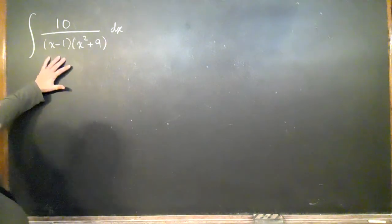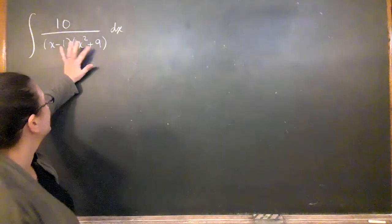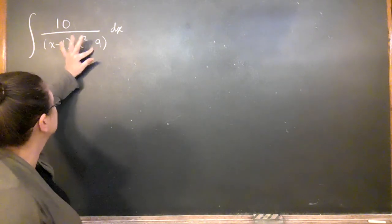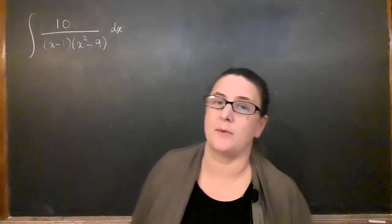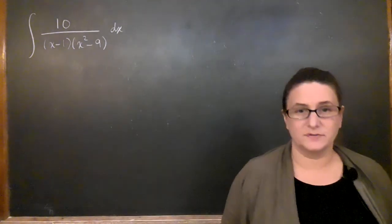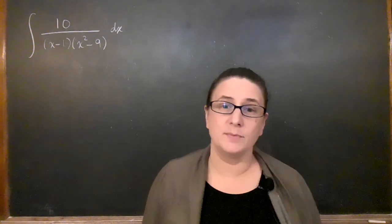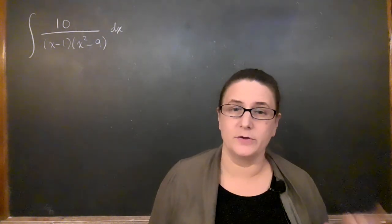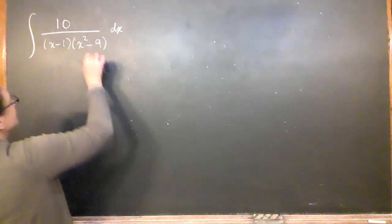So here we have a linear factor, and here we have a quadratic factor. If this was a minus, all right, we know how to do this problem. We did one like this in the first video. We just factor that down to x minus 3 times x plus 3, and then you have three linear factors.